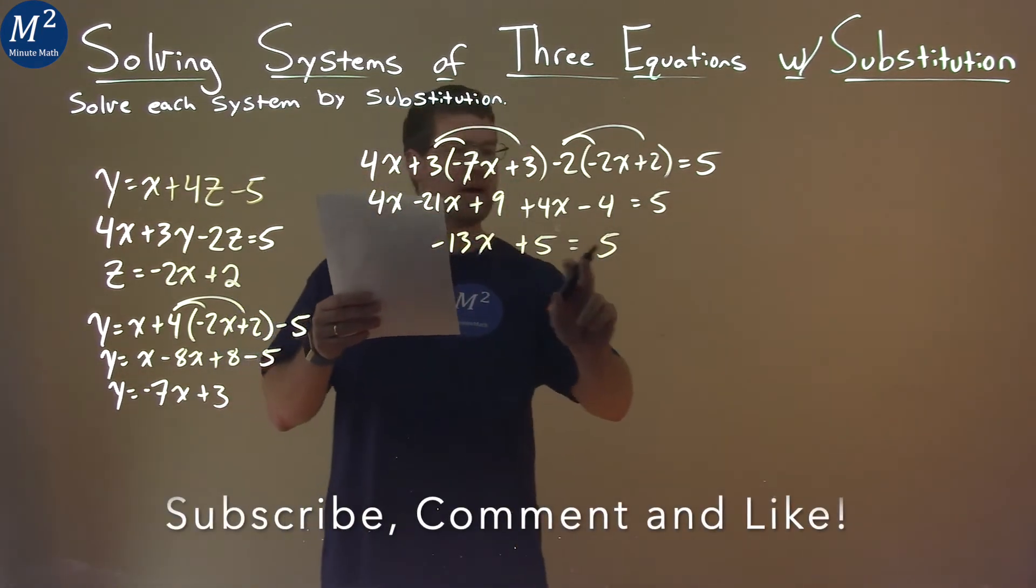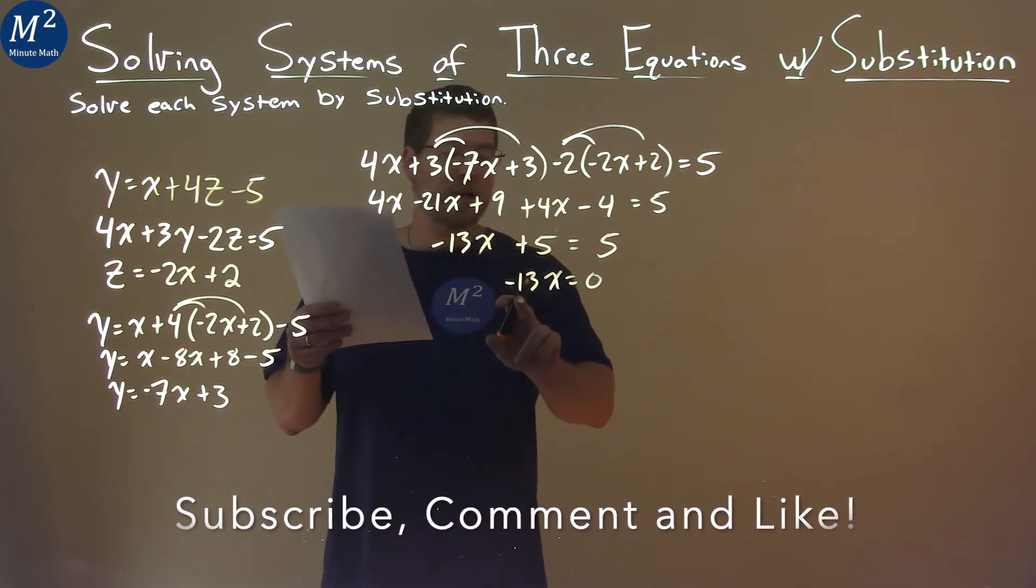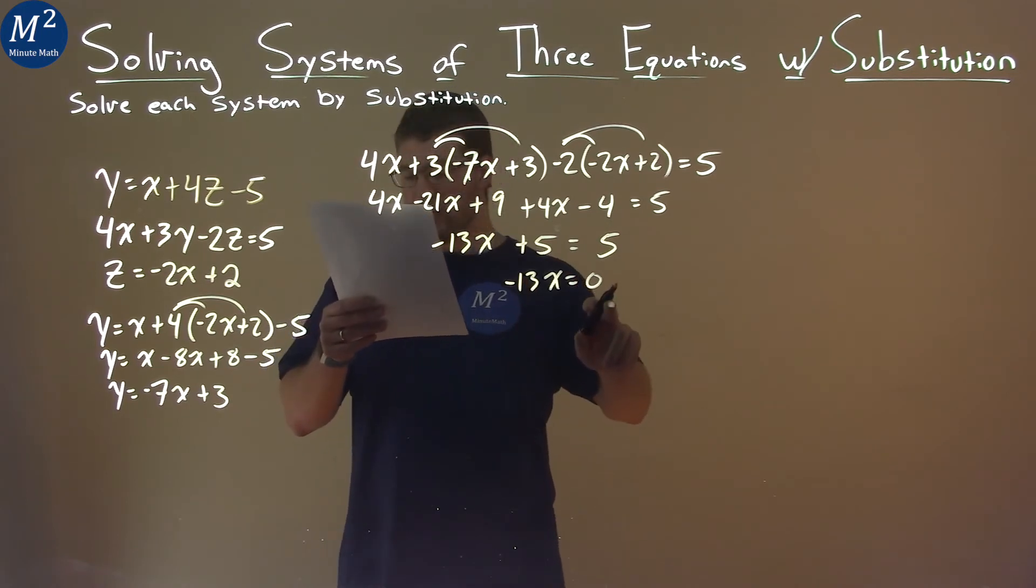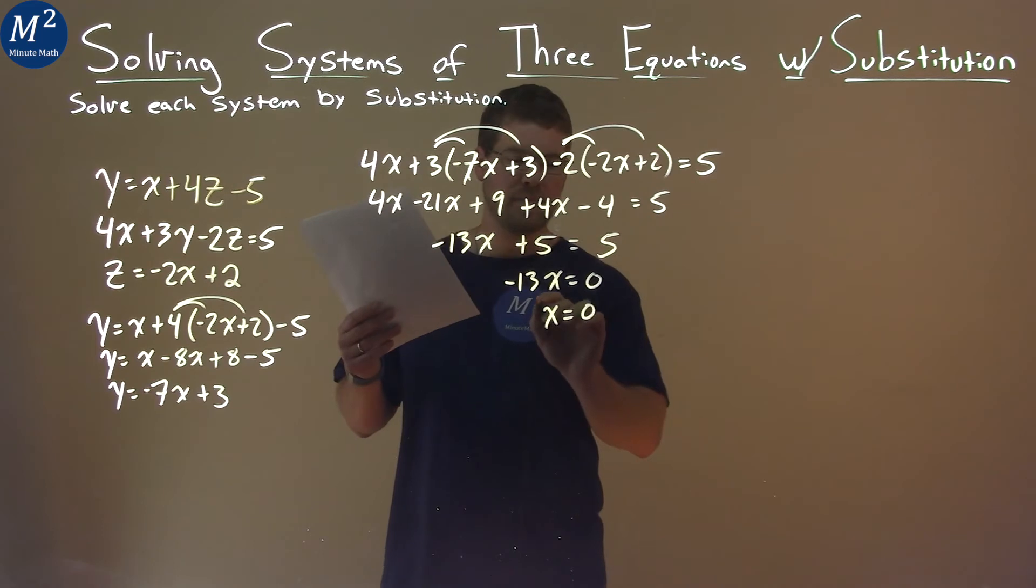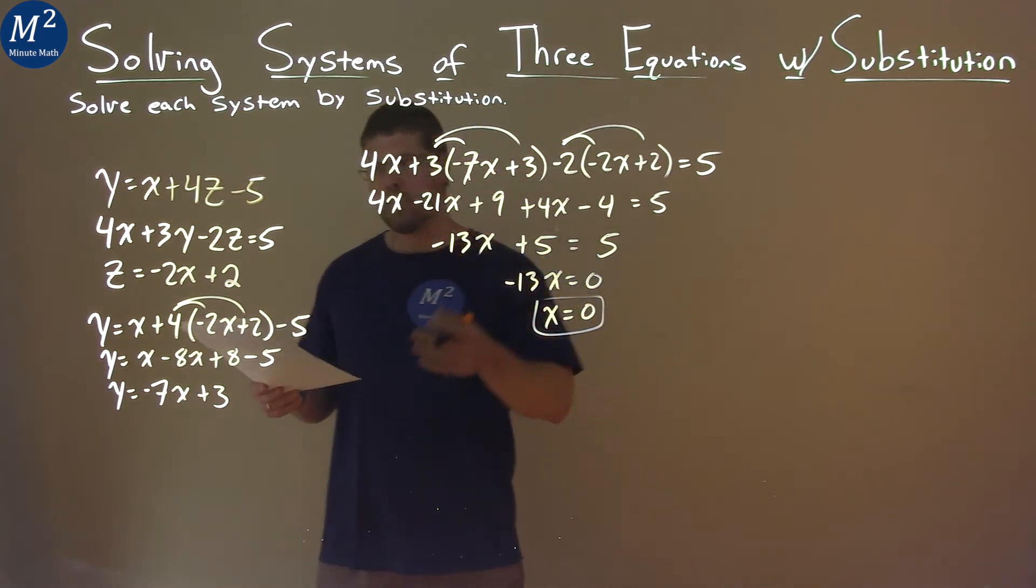Subtract 5 from both sides, and -13x is equal to 0 after all of that. -13 can be divided to both sides, and x is by itself, and 0 divided by -13 is 0. So again, after all of this, x just equals 0. That's nice. That makes the rest of it pretty easy.